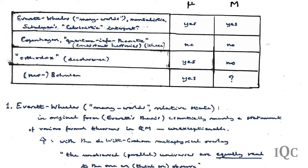At the other end you have the original Copenhagen interpretation and what can be called the quantum information theoretic interpretation—really just an updated version of Copenhagen. These interpretations say: the formalism of quantum mechanics was and was ever intended to be nothing more than a recipe. Quite literally nothing more than a recipe.